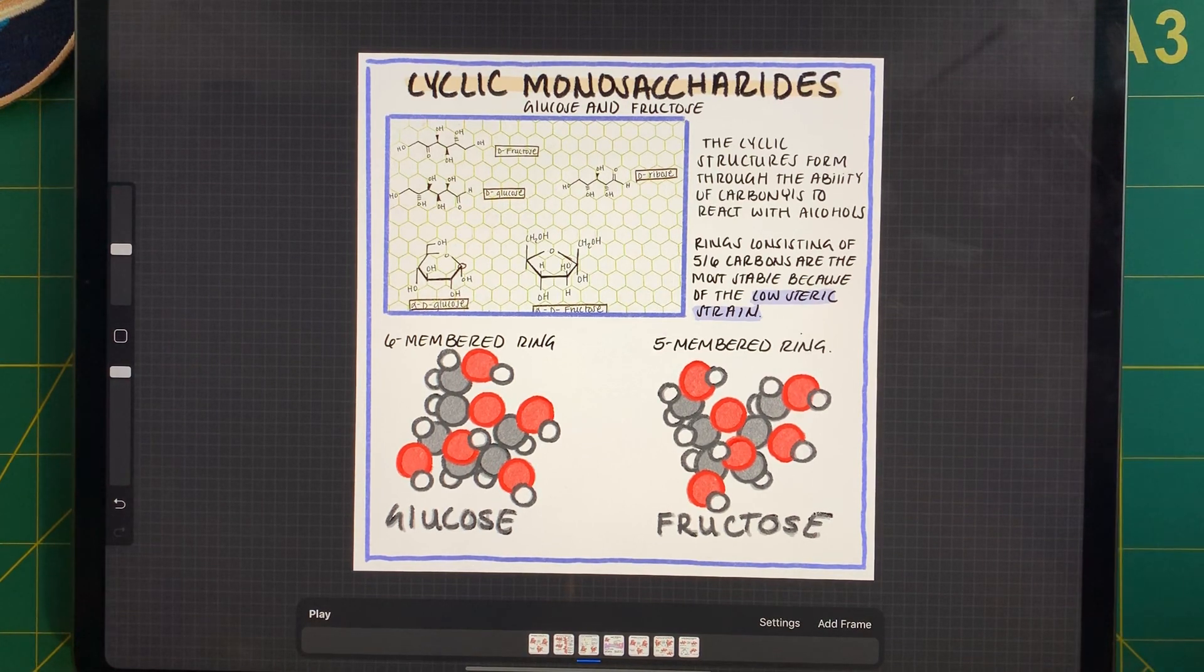Now, the reason why we're not forming four-membered rings or even three-membered rings is because of steric strain. Six-membered rings and five-membered rings are kind of the most stable. They have low steric strain and they don't put so much pressure on the molecule. So we have glucose and we have fructose.